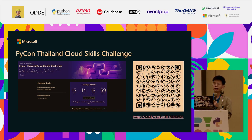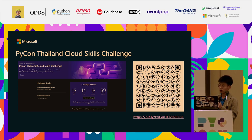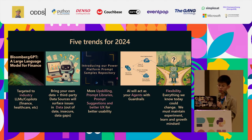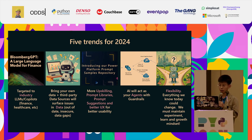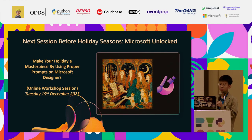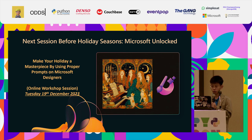Lastly, I'd like to suggest that if you want to challenge yourself, check out the Python Thailand skill challenge — you can scan the QR code here. I also have five trends for 2024: LLMs, Copilot, training on data, improving beta UX, and talking about agents and flexibility. Before the holiday season, I'd like to hold a workshop on December 19th on how to use proper fonts in Microsoft Designer.